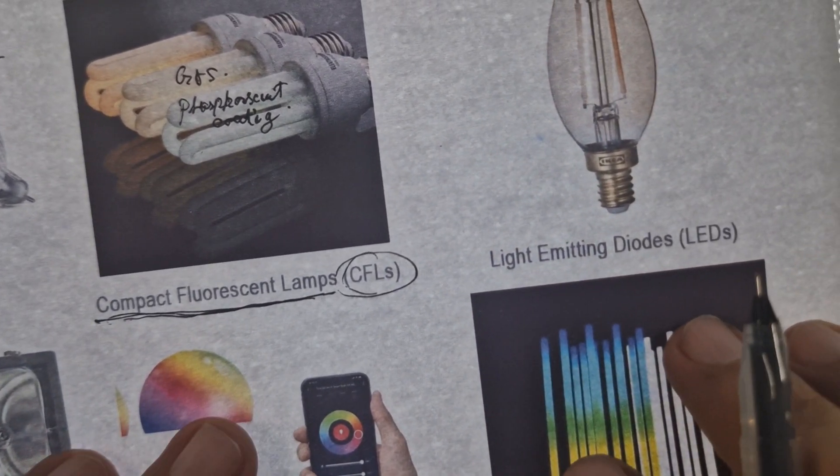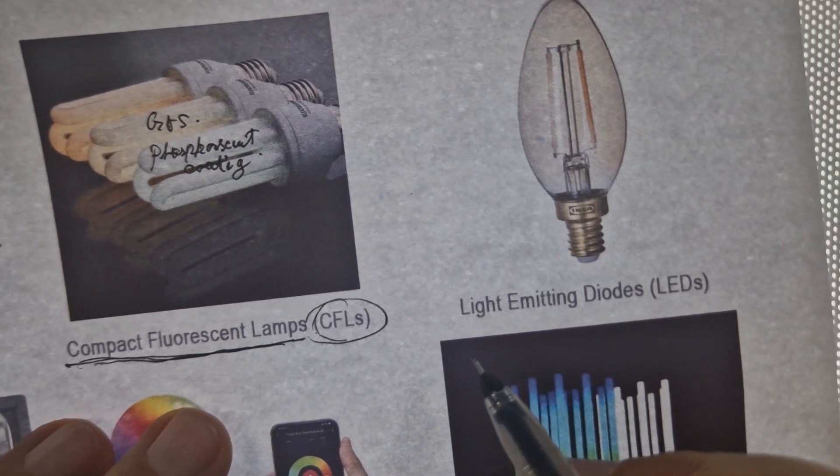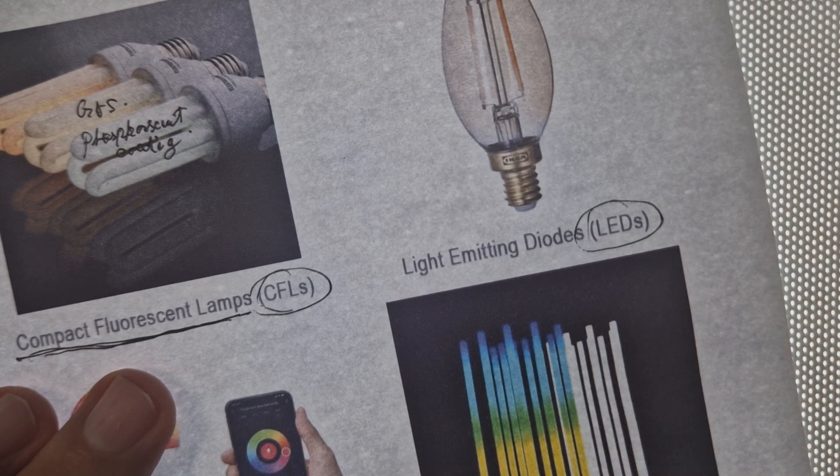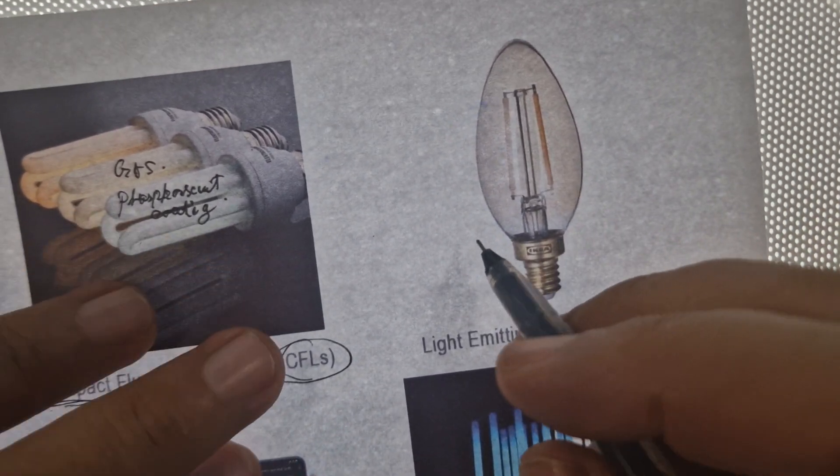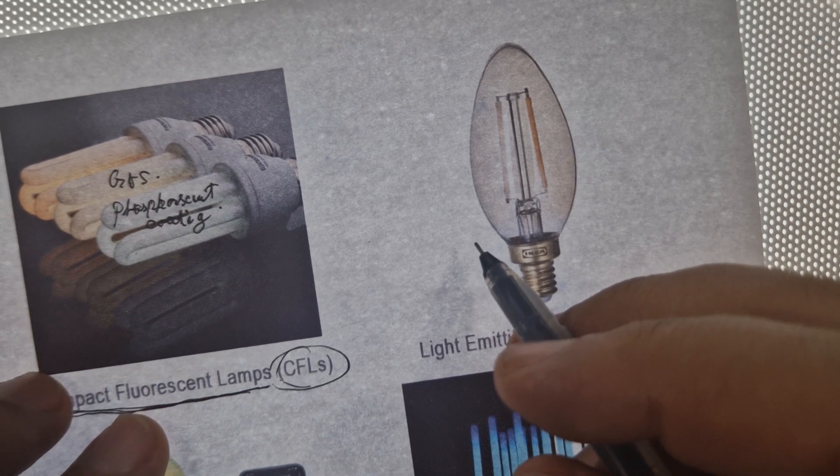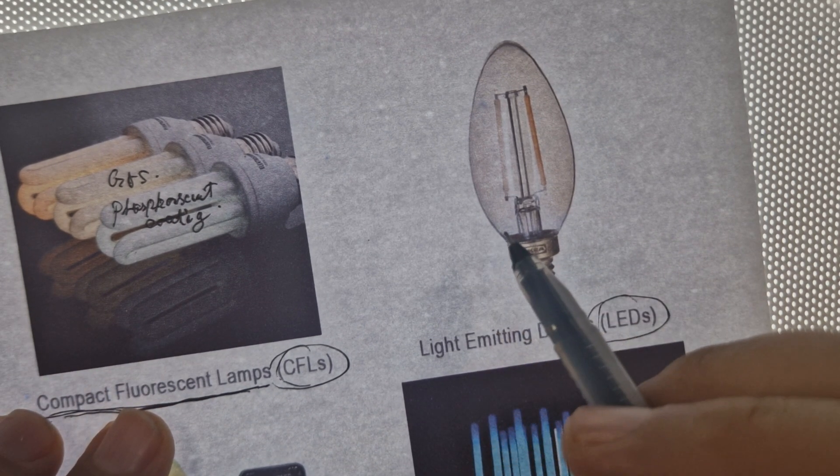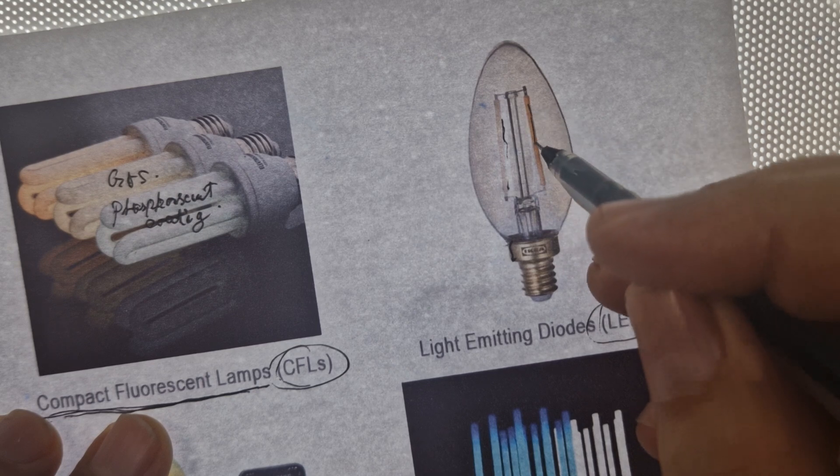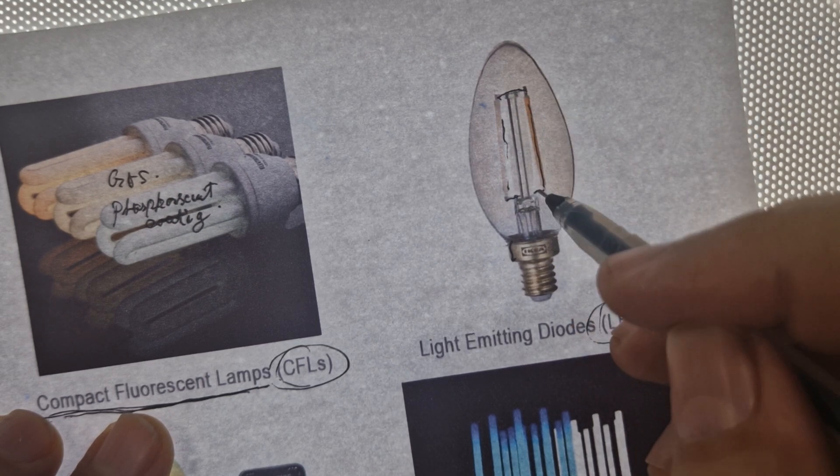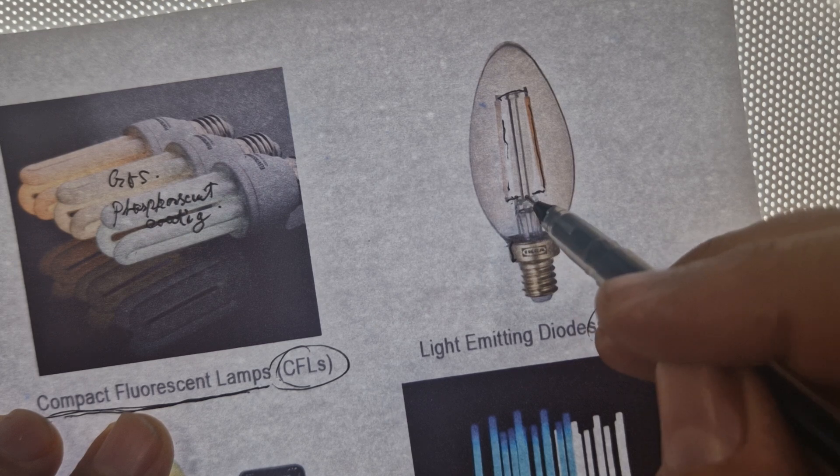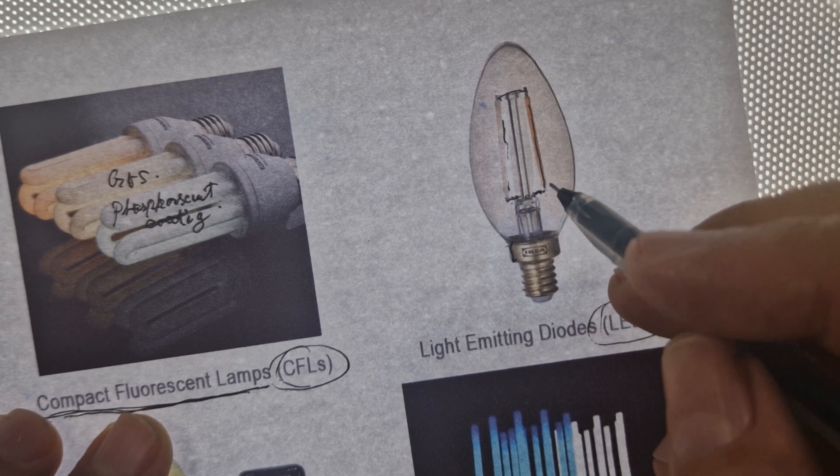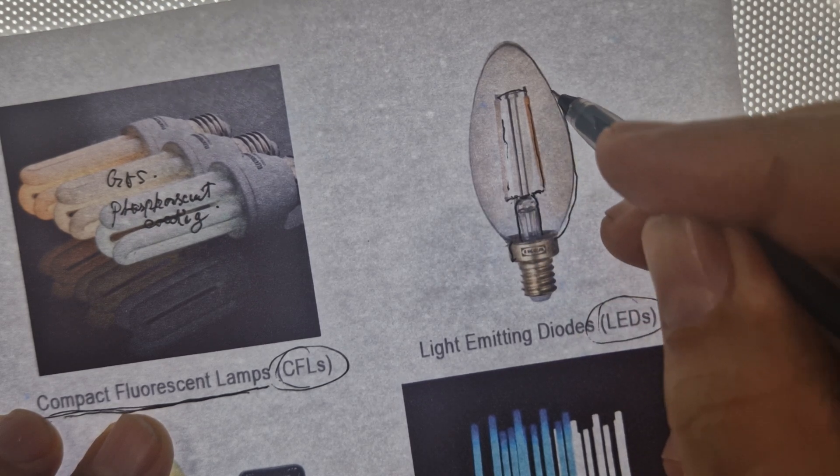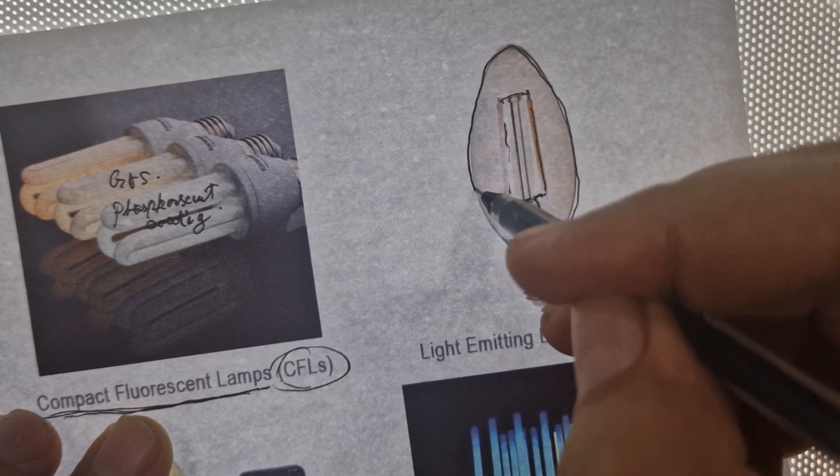Next, we have the light emitting diodes, or LED. What is with the LED? This one is using semiconductors to produce light. A semiconductor emits light when current is passing through. So it's a very cheap technology.